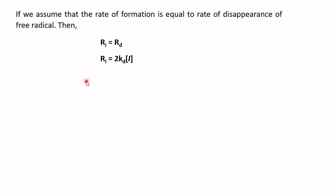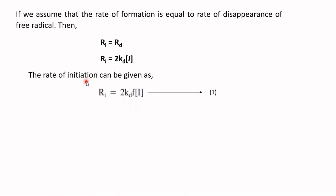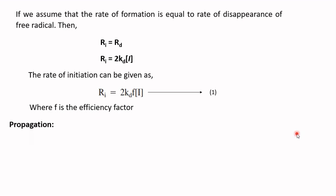The overall expression describing the rate of initiation is given as equation 1: r_i = 2·k_d·f·[I], where f is the efficiency factor — a measure of the fraction of initiator radicals that produce growing radical chains.